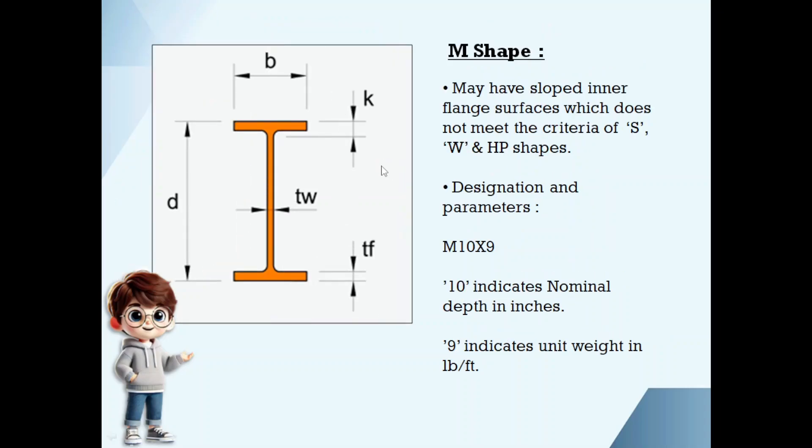M shape may have sloped inner flange surfaces, but it will not meet the criteria of remaining W, S, and HP shapes. If we take M 10 by 9, 10 indicates nominal depth, 9 indicates unit weight.